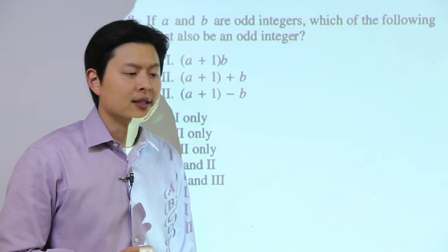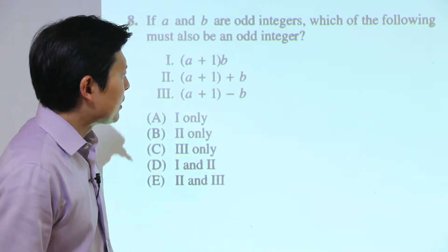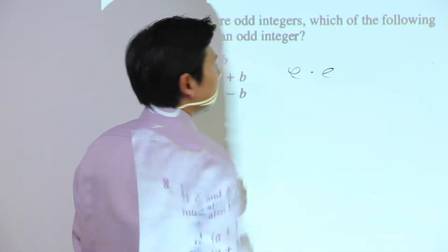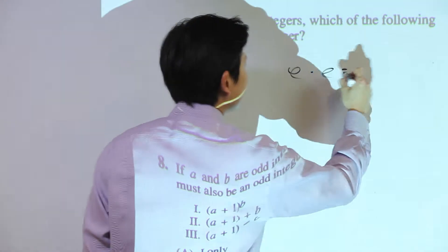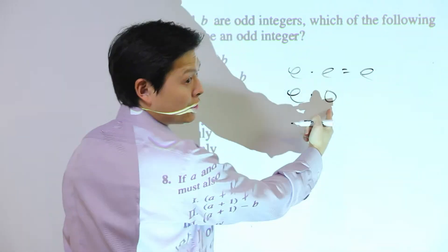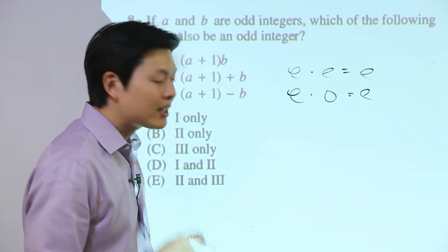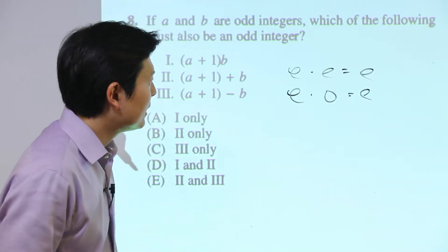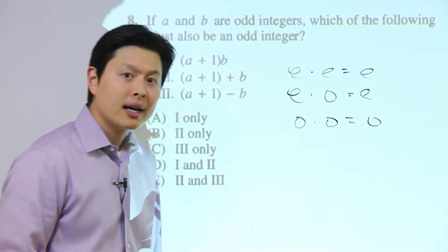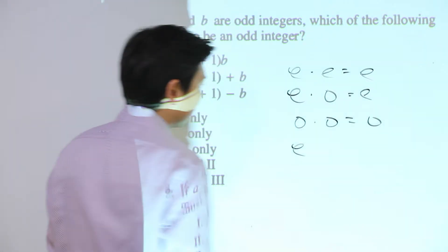For this lesson I want to focus on the rules you should know for parity. For multiplication: even times even is always even. In fact, even times anything is always even. Odd times odd is the only multiplication that gives you an odd result.